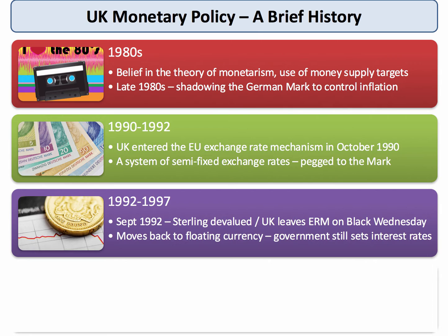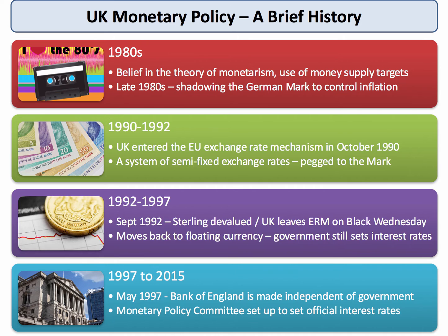From September 1992, Britain moved back to a system of floating exchange rates, where the value of the pound on the foreign exchange markets was left to the markets to decide. From 1992 through to 1997, however, the government kept control over the setting of interest rates — it was the job of the Chancellor and the Treasury to set the base rate of interest for the wider economy.